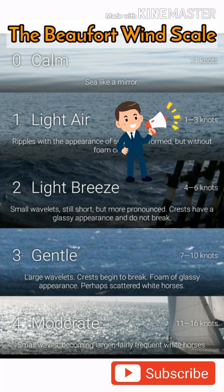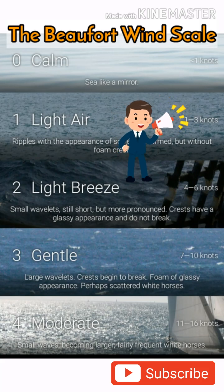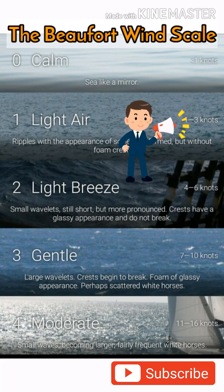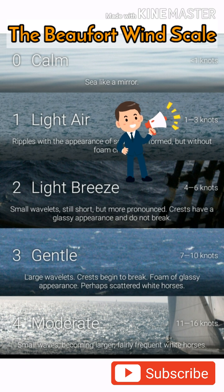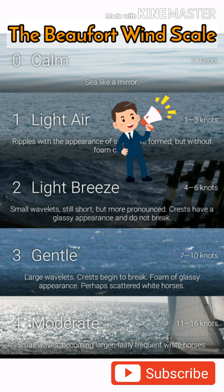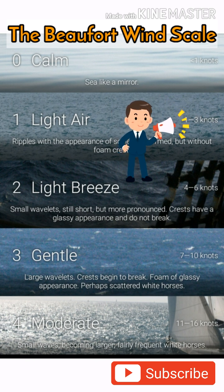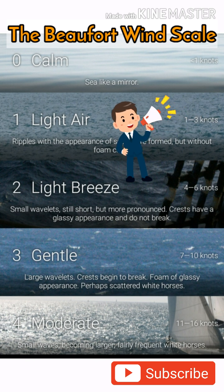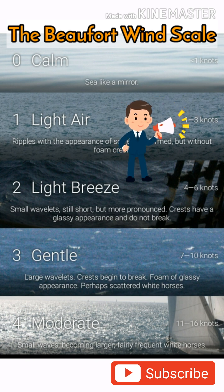Beaufort Wind Scale Force 0 — Calm. Wind speed less than 1 knot. Sea like a mirror. Force 1 — Light Air. Wind speed 1 to 3 knots. Sea rippled.